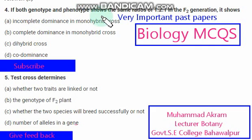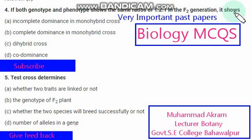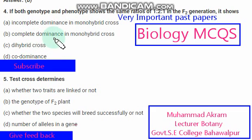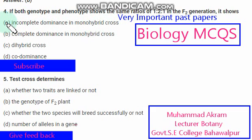If both genotype and phenotype show the same ratios in F2 generation, it shows — the right option is codominance. Options included dihybrid cross, complete dominance in monohybrid cross, and incomplete dominance in monohybrid cross. The right option is option A.